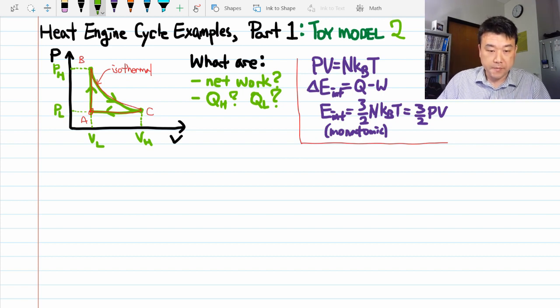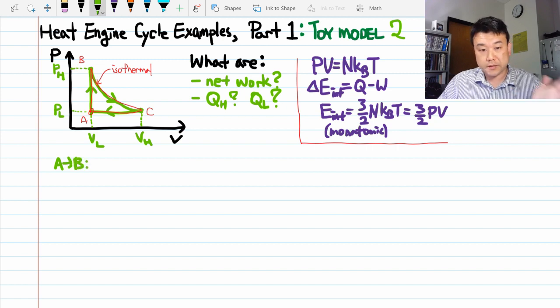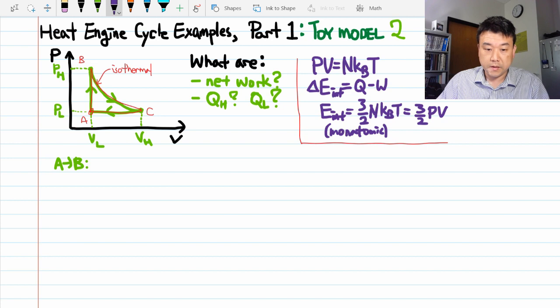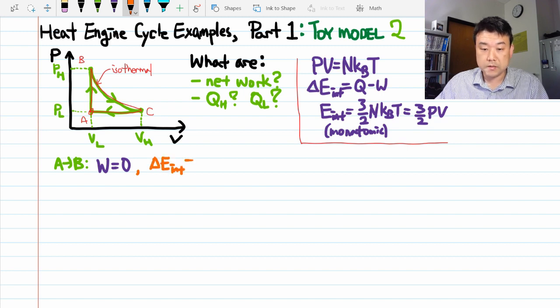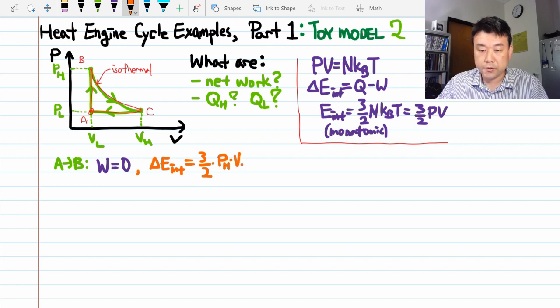So the process from A to B looks very much similar to what we analyzed before. In fact, it's the same process. So let's go through it. The network done is zero, no change in volume. And change in internal energy is three halves times the difference of pressure times volume. So the ending pressure times volume, high pressure times low volume,